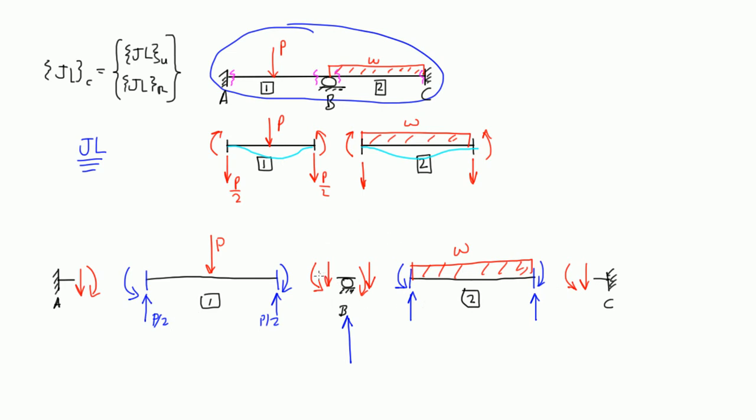Now our joint load diagram is actually a diagram we use to show these reactions, this reaction, this reaction, and this reaction on the member. These, the ones I circled in purple, are the joint loads. That's what JL stands for.